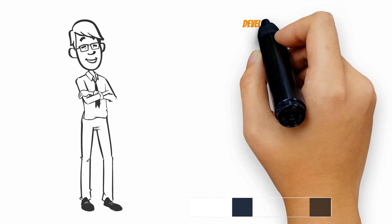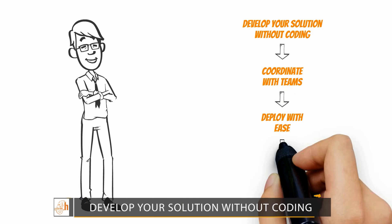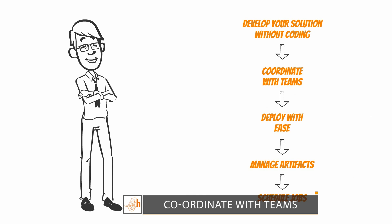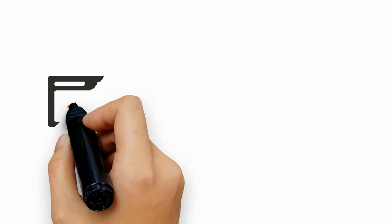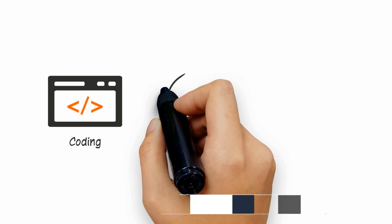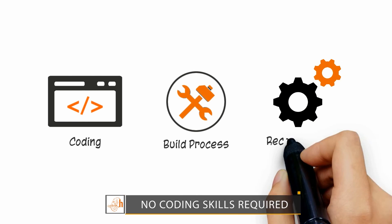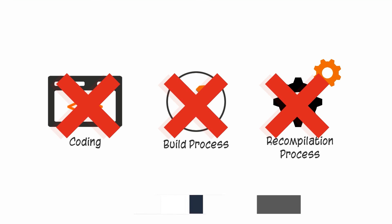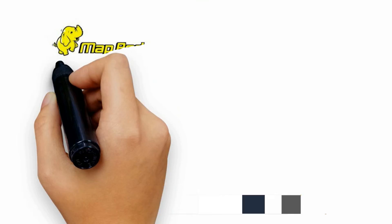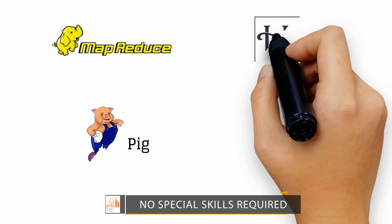With H-Trunk, you can develop your solution with zero or much less coding, coordinate with teams, deploy with ease, manage artifacts and schedule jobs. No coding skills are required. You can bid a fond farewell to the build process, the recompilation process and resolving version dependencies. No special skills required.